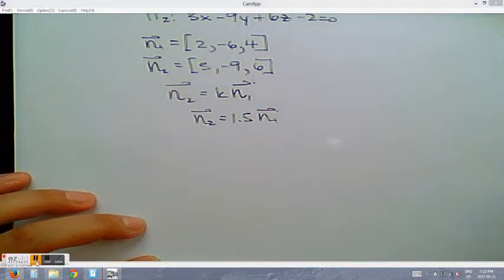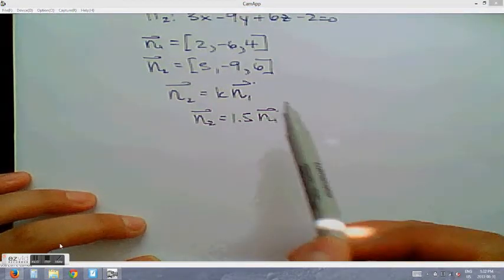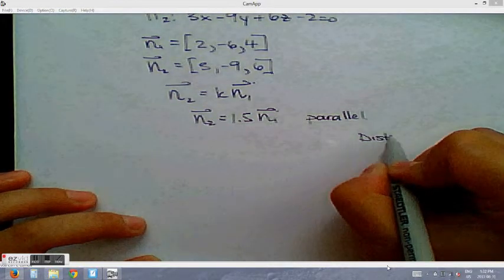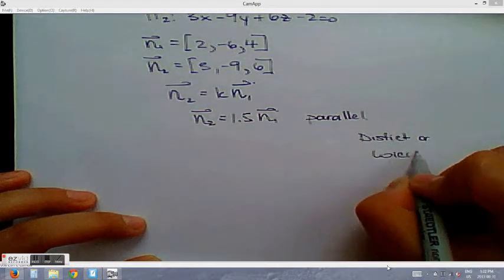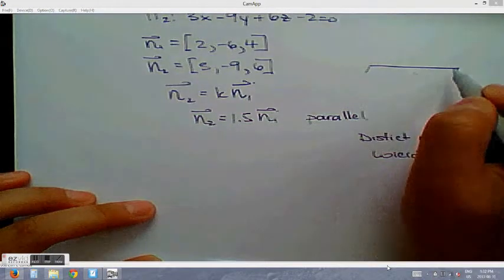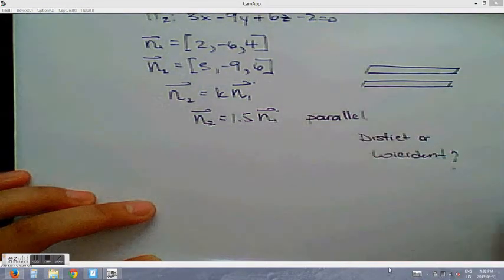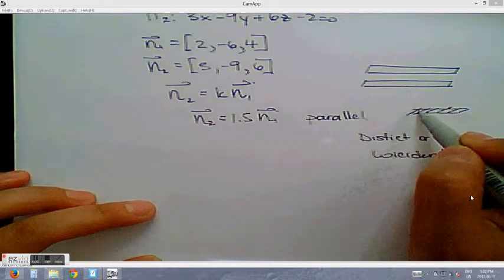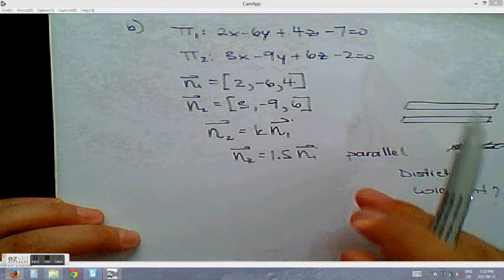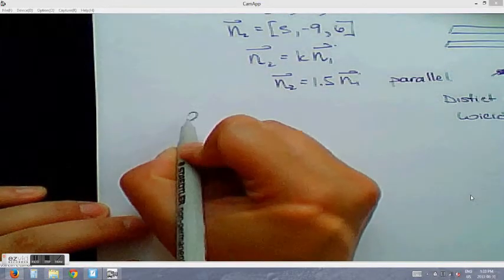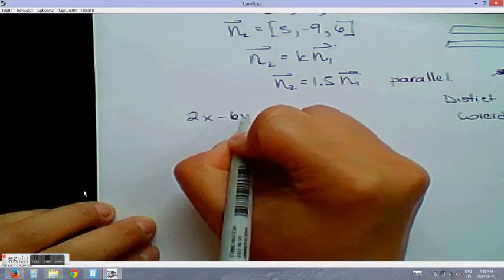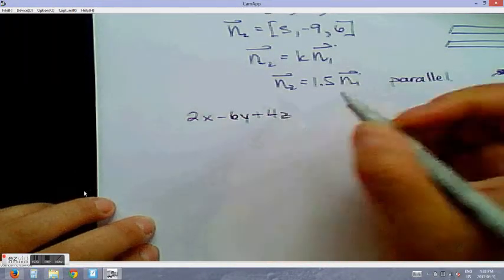That means the two planes are parallel. However, are they parallel and distinct, or coincident? Are they parallel and will never touch each other, or do they lay on top of each other? Let's use elimination to test these two planes. If they are coincident, there's an infinite number of solutions. If they are parallel and distinct, there are no solutions. So: 3x minus 9y plus 6z minus 2 equals 0 (equation 1) and equation 2.